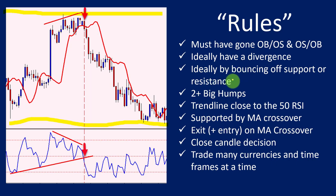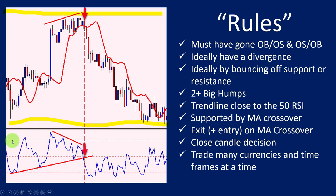Another very important element: there must be two humps — that's a term I've made up. Essentially there's a hump and there is another hump; there must be at least two big humps, and sometimes there are three. We have our two big humps here, and that means the price is moving quite nicely in waves. So far this signal is meeting all those requirements.